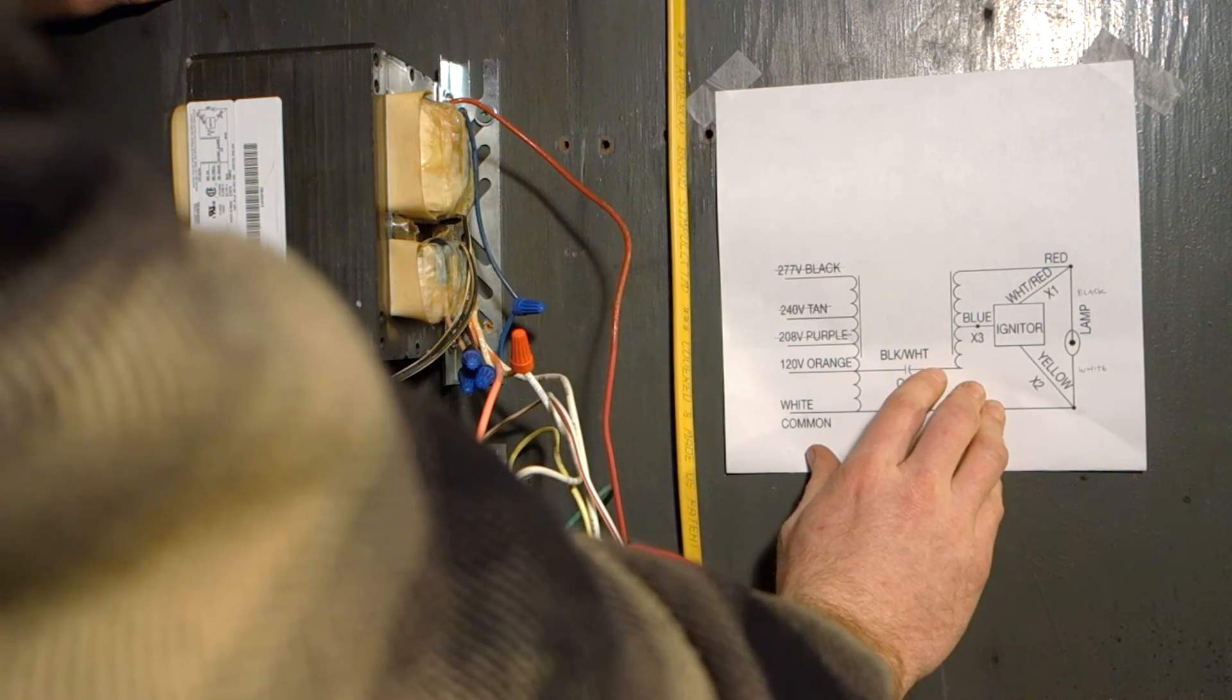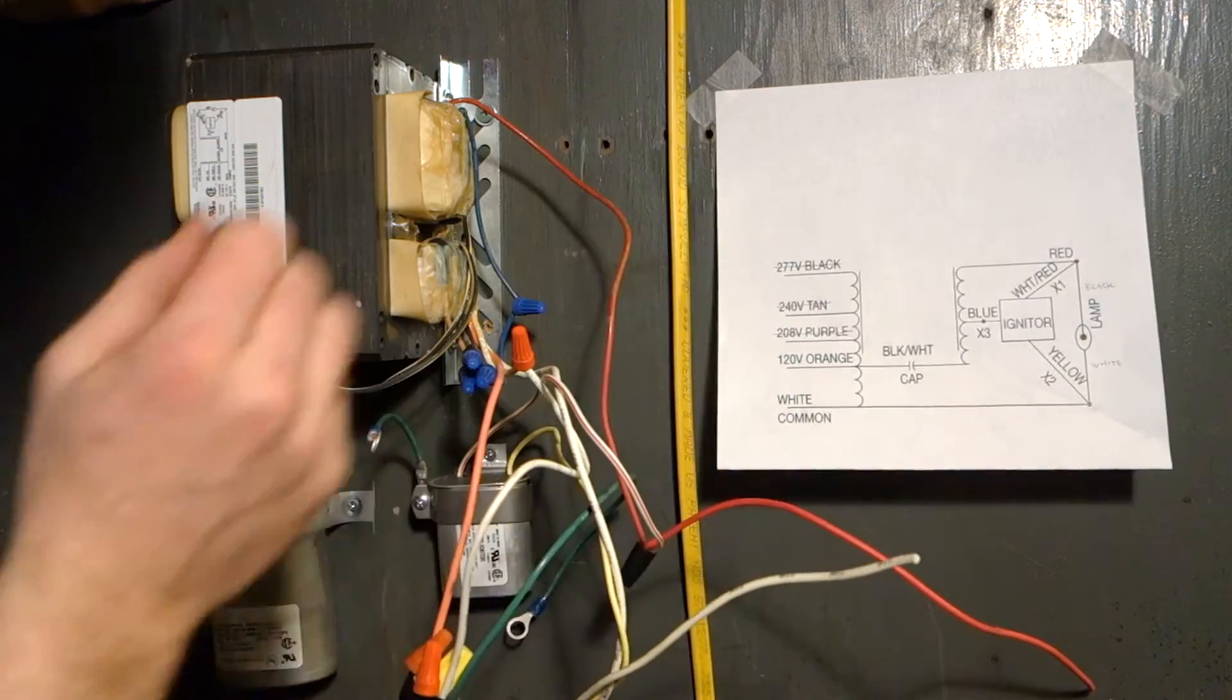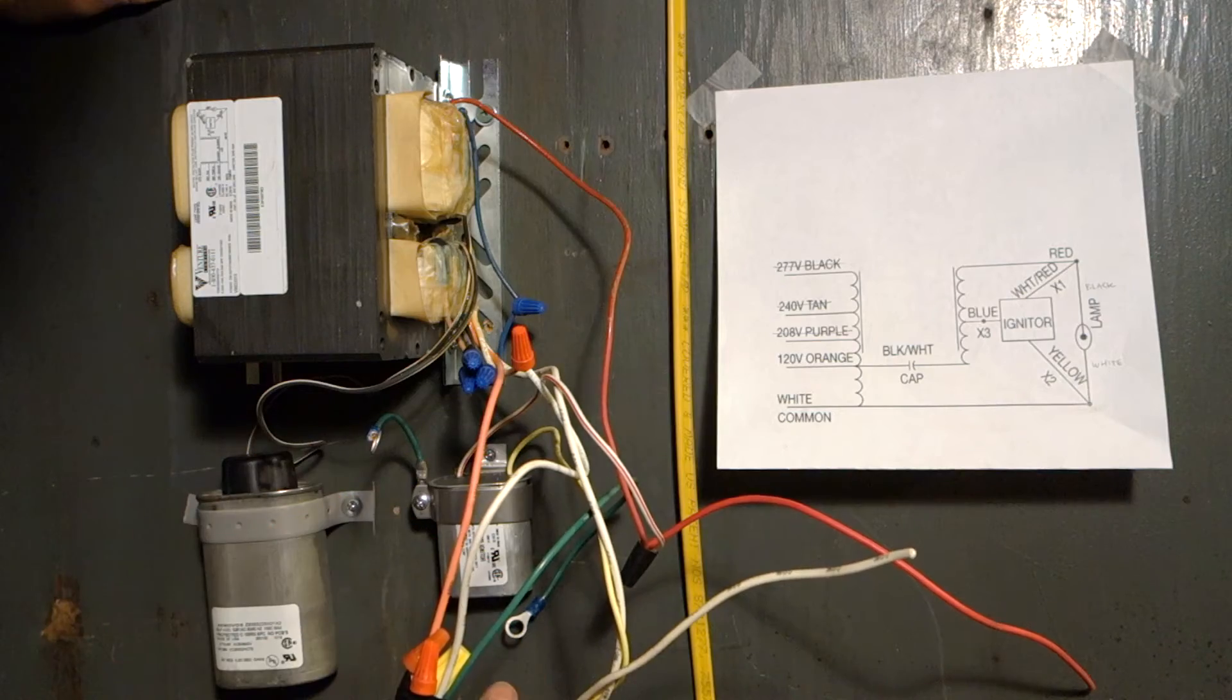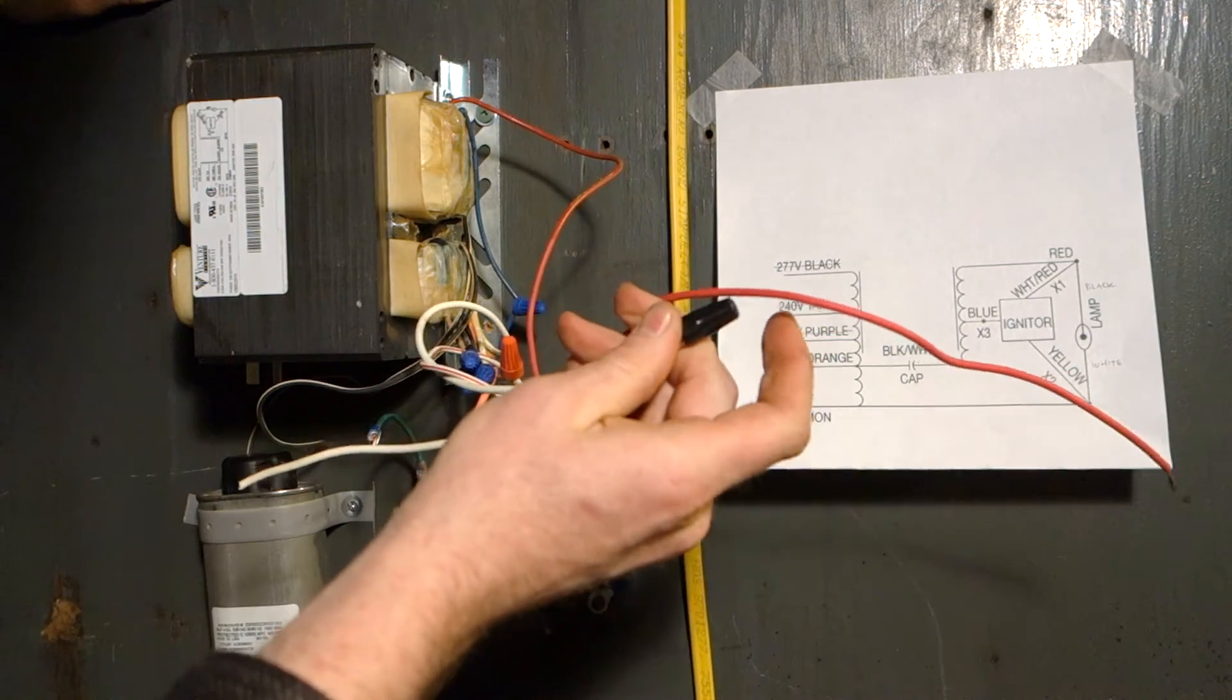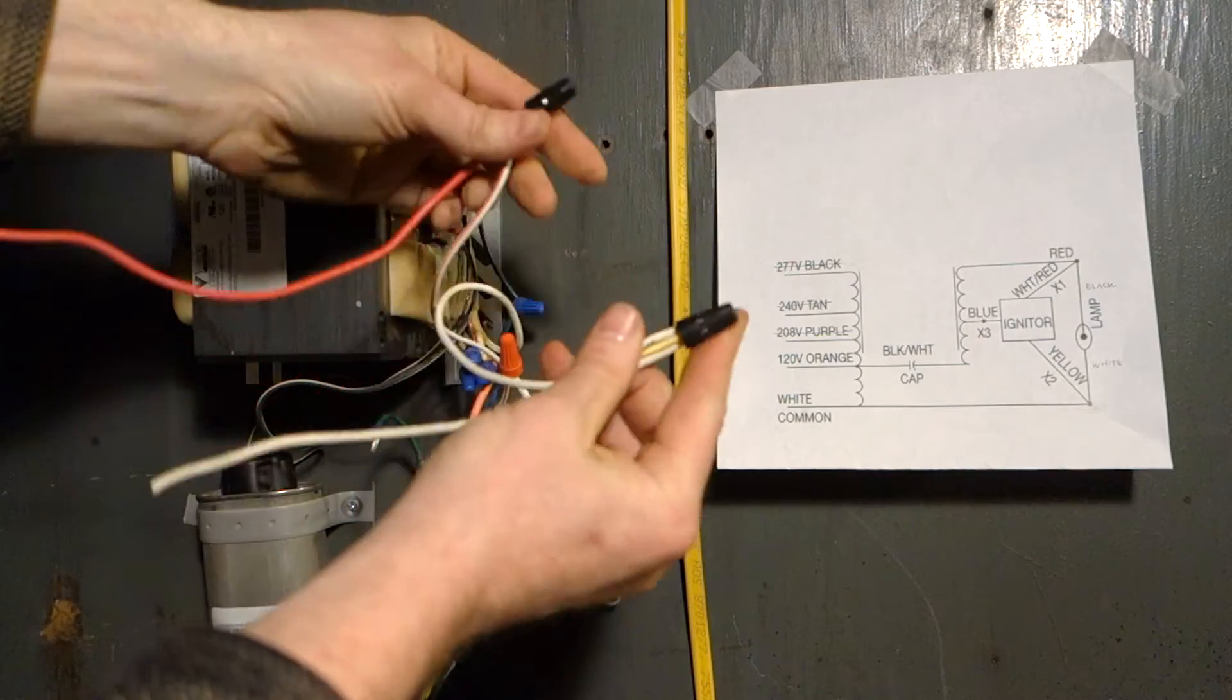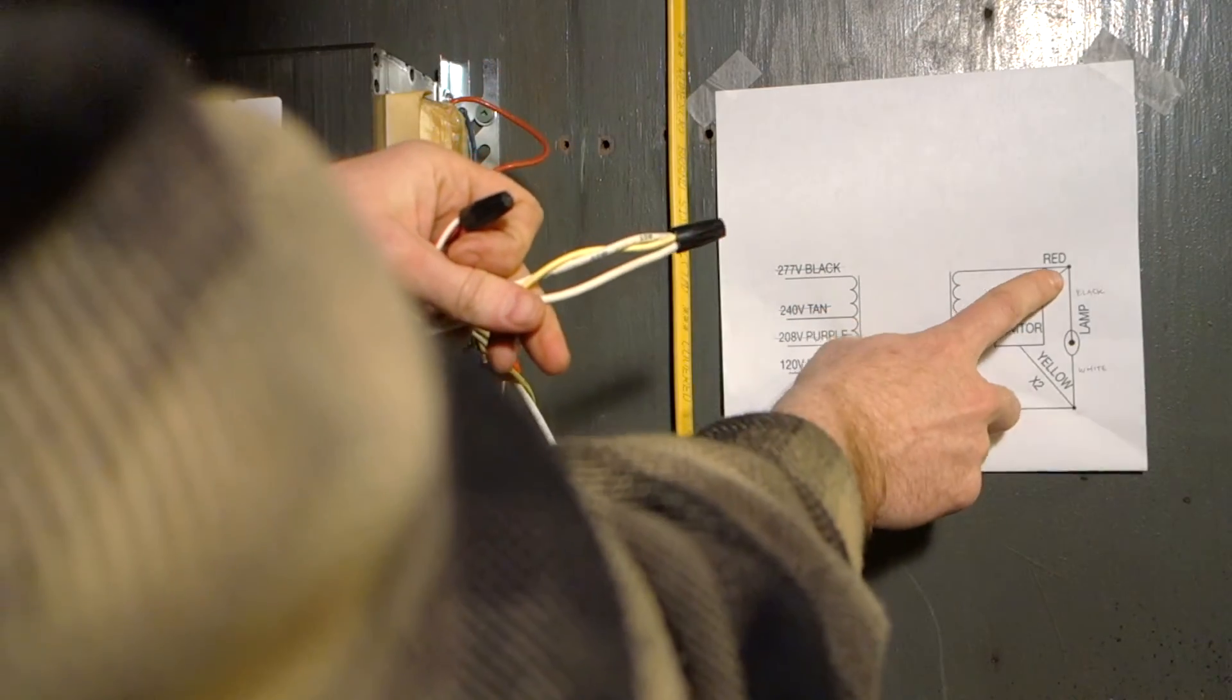I think we went over, this was all pre-wired, the black white to the capacitor, so you don't have to do anything there. And then as you can see, these are also pre-wired, these connection points here and here.